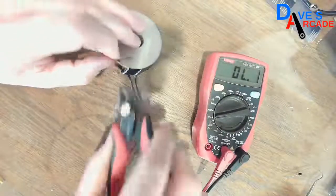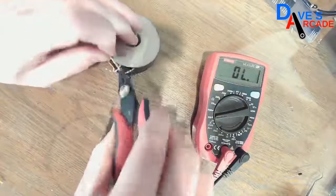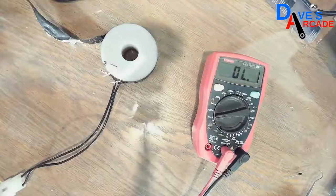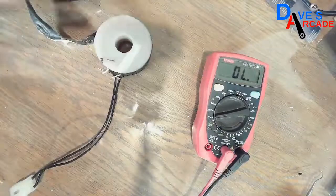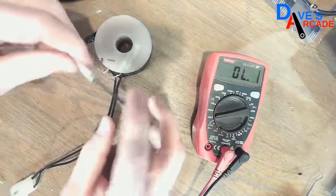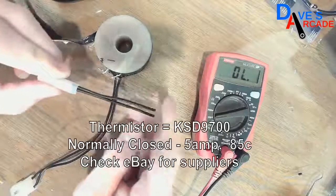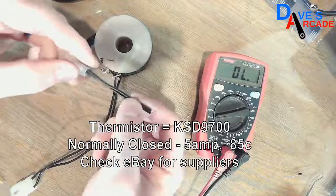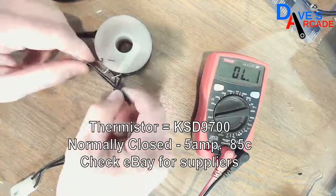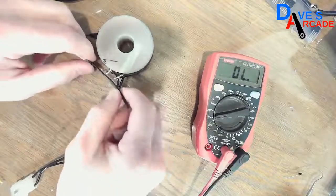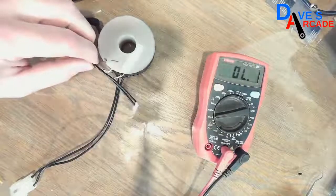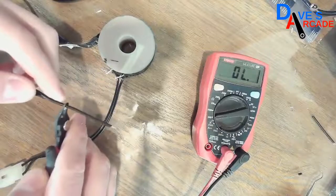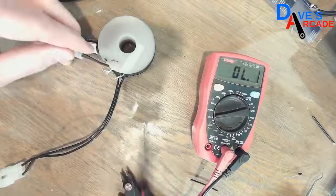From here, the easiest thing to do is just cut off the leads and put the bad one off to the side. I'll have the rating of the new thermal protector listed in the notes, but sometimes they come with leads that are just too long. So you can cut these to whatever length you want and then strip the ends.